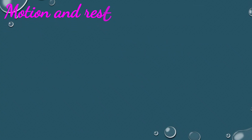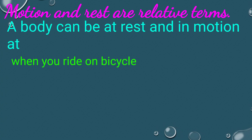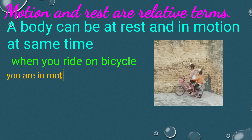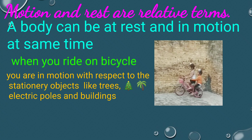Motion and rest are both relative terms. A body can be at rest and in motion at the same time. When you ride a bicycle, you are in motion with respect to stationary objects like trees, buildings, and electric poles. But you are at rest with respect to the person sitting behind you and with respect to the bicycle.